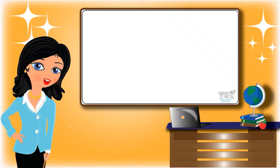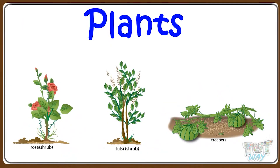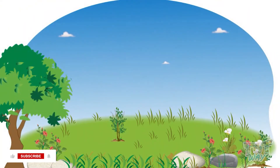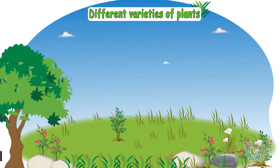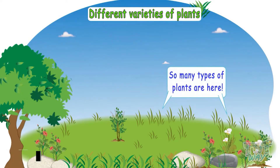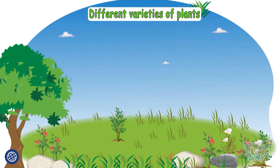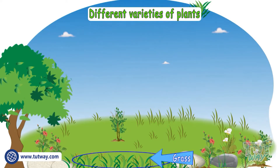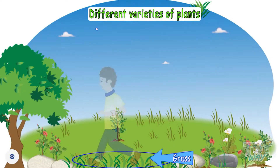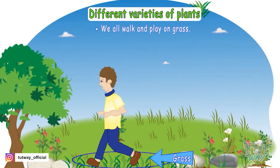Hi kids, today we will learn about plants. Let's go to the garden to see different varieties of plants. Look, so many types of plants are here. Some are very small plants, and some are big. This is grass — we all walk and play on grass in the garden.